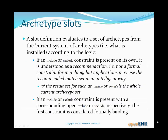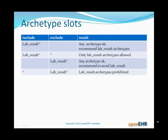The slot definition evaluates to a set of archetypes from the current system according to the following logic. If the include constraint says any lab result archetype is okay, the actual meaning is that any archetype is acceptable, but the constraint recommends lab result archetypes. If the constraint had an include with any lab result archetype and an exclude with star — meaning any archetype — then that formally means only lab result archetypes are allowed.